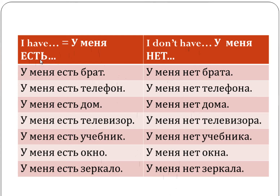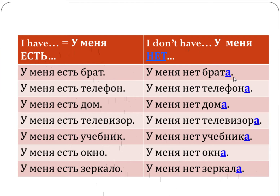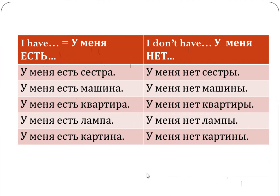So comparing these sentences, I'm hoping that you've noticed that the minute есть changed to нет, some changes occurred in the sentences. All of these words that used to be in the sentence when есть was present are in nominative case — no change from the dictionary. But when the word changed from есть to нет, the words now have a different ending.